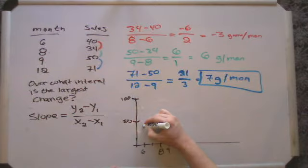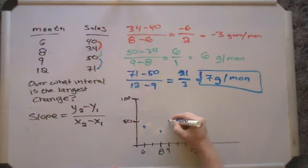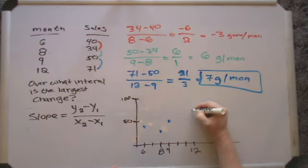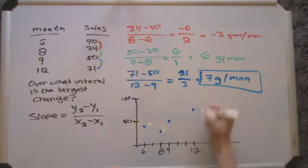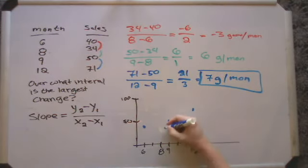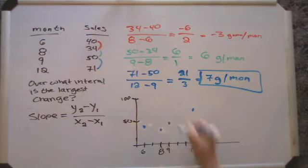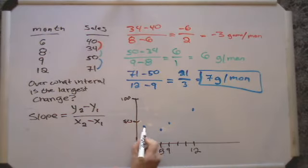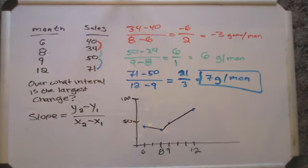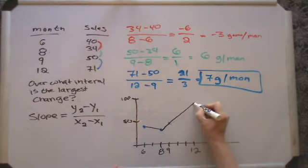And then 34 would be here. 50, well that's right there. And 71 is right there. That's a little low for that point. Let's move that up just a pinch. There we go. That's a little nicer. And this would be our graph if we were to plot these points. That's what it would look like.